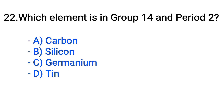Question number 22. Which element is in group 14 and period 2? Option A: Carbon. B: Silicon. C: Germanium. D: Tin. The correct answer is option A, Carbon.